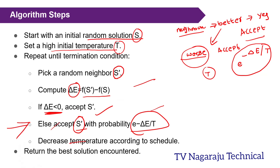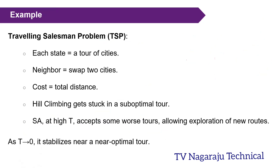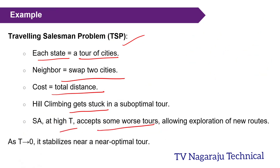Now consider the classic example: the Traveling Salesperson Problem. Each state represents a tour of cities, neighbor means swapping cities, and cost is total distance. It may get stuck at one local optimal tour. At high temperature it accepts the worst tour also and explores new routes. As T decreases to zero — step by step decreasing T means cooling slowly — we analyze carefully and may get a near-optimal tour.